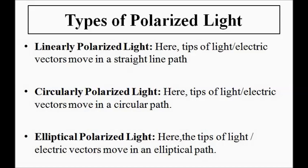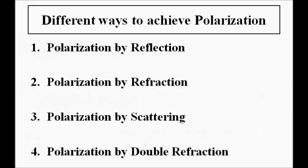There are also different ways in which polarization is achieved through various optical phenomena. I have not gone into detail as each method is very vast in itself, but briefly: polarization can be achieved by reflection, refraction, scattering, and double refraction. In reflection, the ray of light is incident at the interface at a particular angle called the polarizing angle, and as a result the reflected ray is partially polarized.